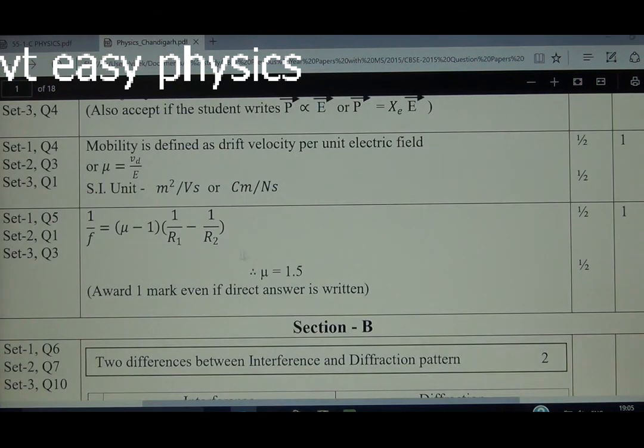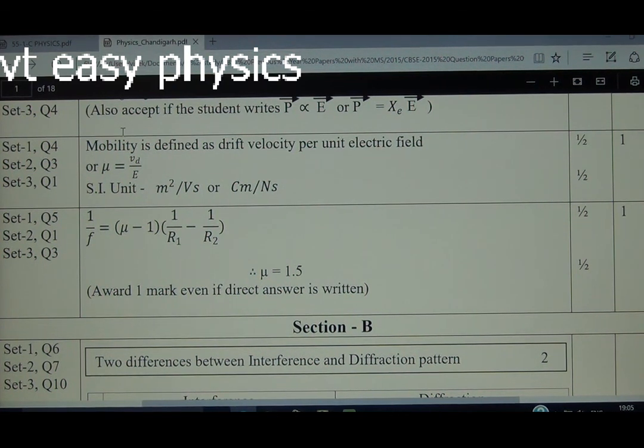We can directly find it using lens maker's formula: 1/F = (μ-1)(1/R₁ - 1/R₂). If we put the required condition, we get μ = 1.5. So this is all about the Chandigarh or Panchukula region paper.